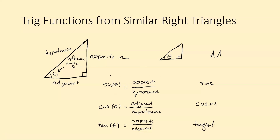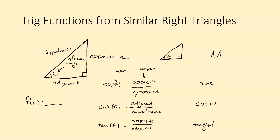It's a function just like you learned in algebra, like f(x) equals something. But this time, the sine of theta — whatever the angle measure is — equals the ratio opposite over hypotenuse. The angle measure is our input and the ratio is our output. The cosine of that angle measure is adjacent over hypotenuse, and the tangent of that angle measure is opposite over adjacent.